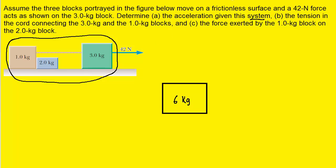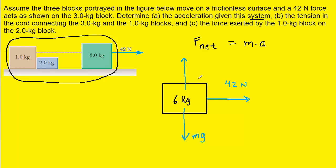We can see that there is a 42 Newton force being applied to that system. To determine the acceleration, we can use Newton's second law, which tells us that the net force acting on an object is equal to its mass times its acceleration. There are two other forces acting on this block: the downward gravitational force mg, and the upward normal force. The normal force and the gravitational force cancel each other out because they are equal in magnitude, so the net force becomes the 42 Newtons.